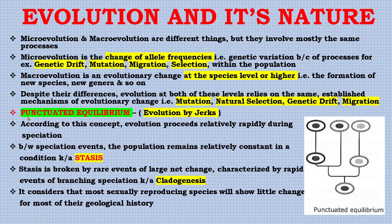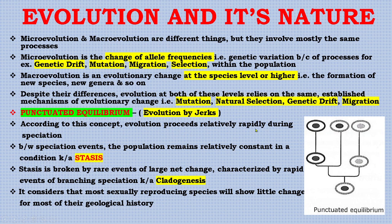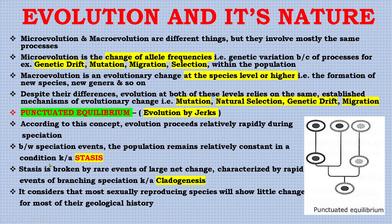Next is punctuated equilibrium, sometimes called 'evolution by jerks.' According to this concept, evolution proceeds relatively rapidly during speciation events. Between speciation events, the population remains relatively constant — a condition known as stasis. Stasis is broken by rare events of large net change, characterized by rapid branching speciation known as cladogenesis.